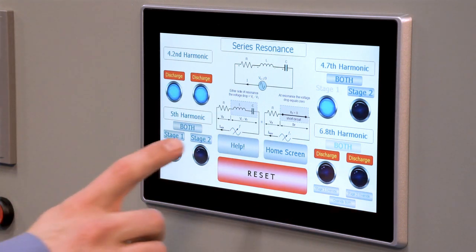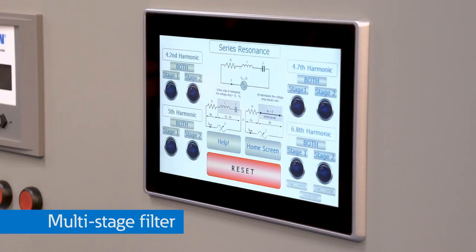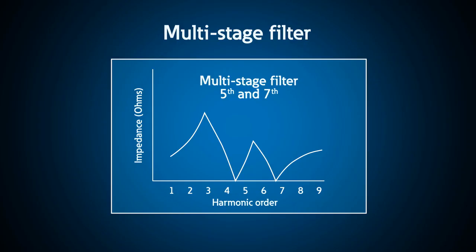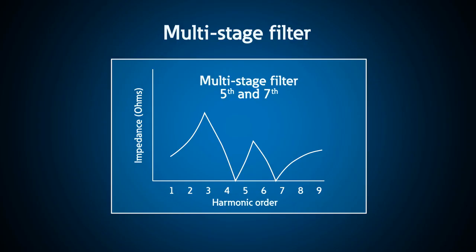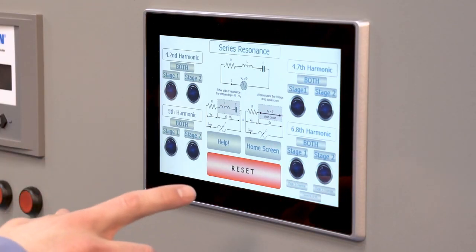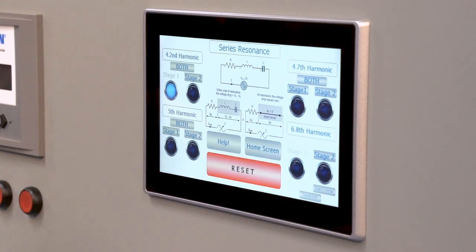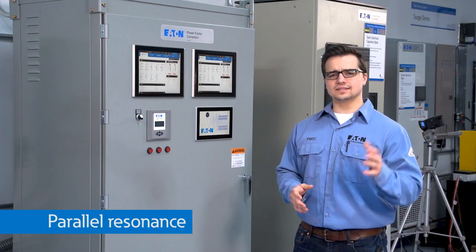There is also a reset button that will reset all of the stages and cool them all down to ensure that all capacitors are discharged. If you ever want to filter more harmonics than just the 5th, we call this a multi-stage filter. For the example here, we're going to switch in the 5th harmonic before the 7th harmonic — you would never want to switch in the 7th harmonic by itself. So if I hit stage 1 of the 6.8th harmonic, one of the 5th harmonic stages is going to switch in first and charge up. Here we have the 4.2nd harmonic stage 1 switched in, it's charging for a few seconds, and now we have stage 1 of the 6.8.